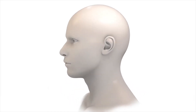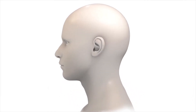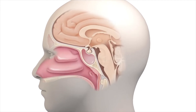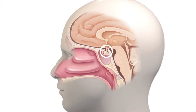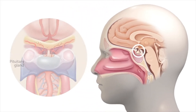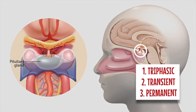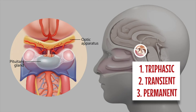After surgery to the region of the pituitary and the hypothalamus, the most common form is central diabetes insipidus. This may exhibit one of the following three patterns: number one is triphasic, which is observed clinically; number two is transient; and number three is permanent.